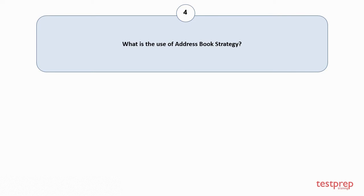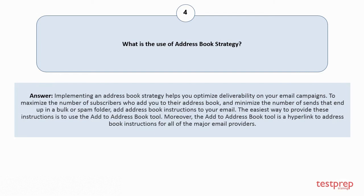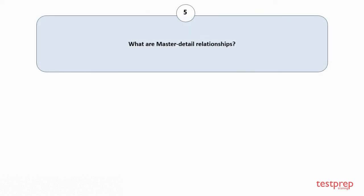Question number four: What is the use of an address book strategy? Implementing an address book strategy helps you optimize deliverability on your email campaigns to maximize the number of subscribers who add you to their address book and minimize the number of sends that end up in a bulk or spam folder. Add address book instructions to your email — the easiest way is to use the Add to Address Book tool, which is a hyperlink to address book instructions for all of the major email providers.